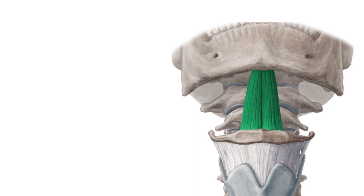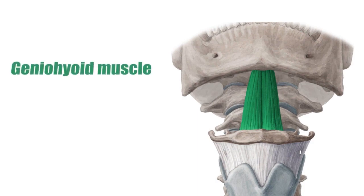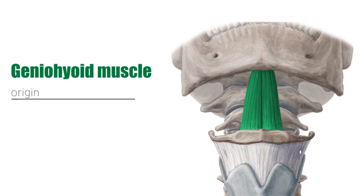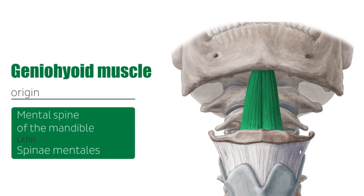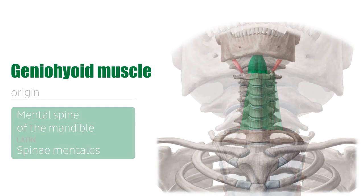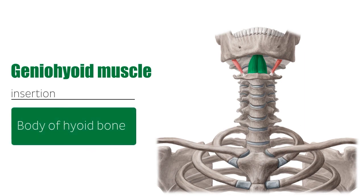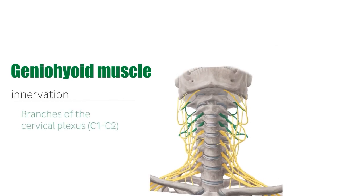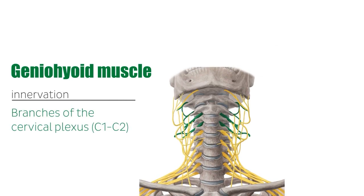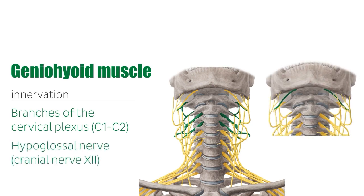The geniohyoid muscle has its origin on the mental spine of the mandible, which is also seen on the inner surface of the mandible. Distally, the geniohyoid muscles insert on the body of the hyoid bone. Geniohyoid is innervated by branches of the cervical plexus C1 to C2, accompanied by the hypoglossal nerve, cranial nerve 12.